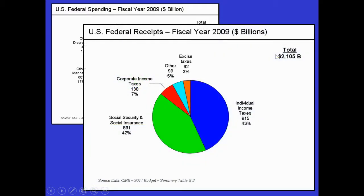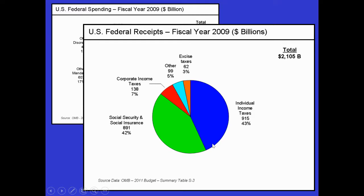Where they got the money: by and large it came from private individuals. Individual income taxes — the federal income taxes that come out of your paycheck before anything gets spent by you — and Social Security and Social Insurance (FICA) also come out of your pocket. So most of the federal spending comes from the taxpayer's pocket. Corporate income taxes, by comparison, are only 7% of revenue. By and large, most of the money spent each year comes from the American taxpayer.